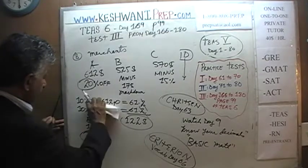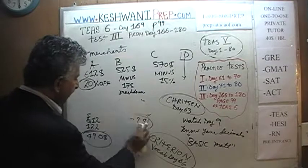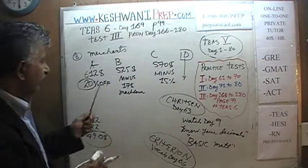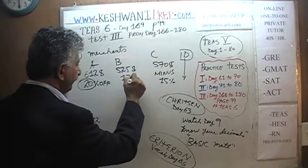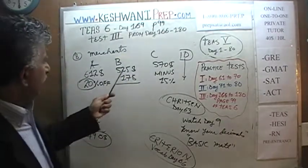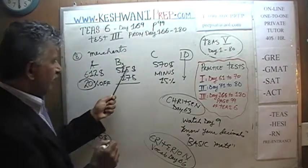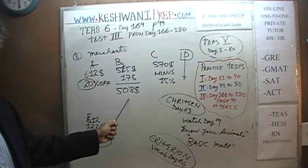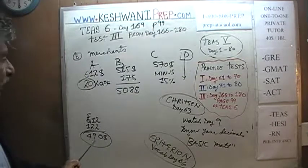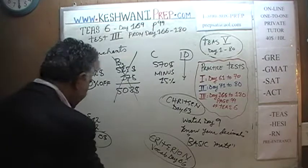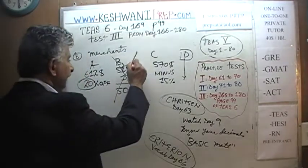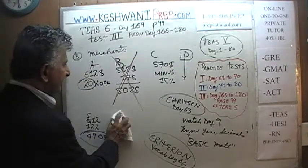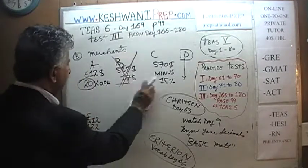Let's look at Merchant B: $525 minus $17. We need to borrow 1, so 2 becomes 1 and 15 minus 7 is 8; 1 minus 1 is 0; bring down 5. That gives us $508. Since B is $508 and A is $490, Merchant B is already out of the running. B is not the answer.